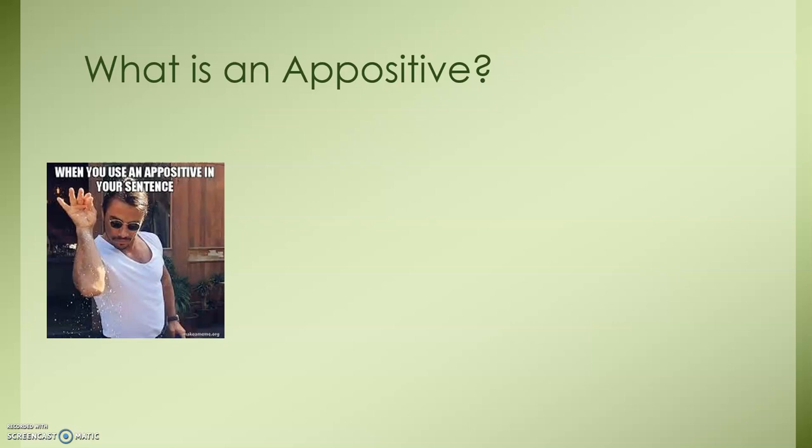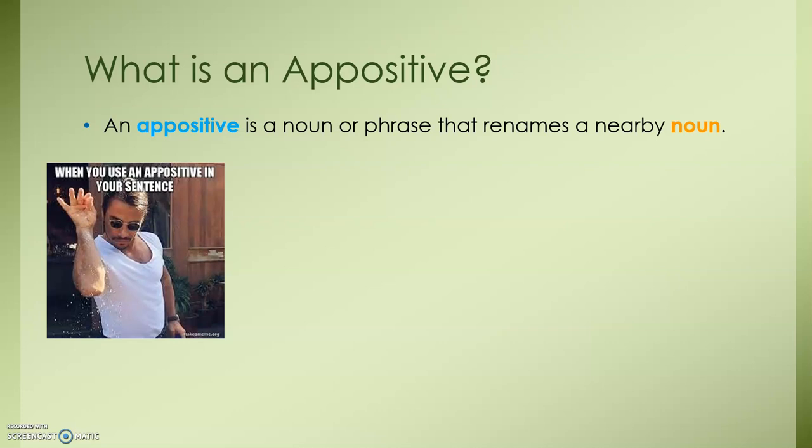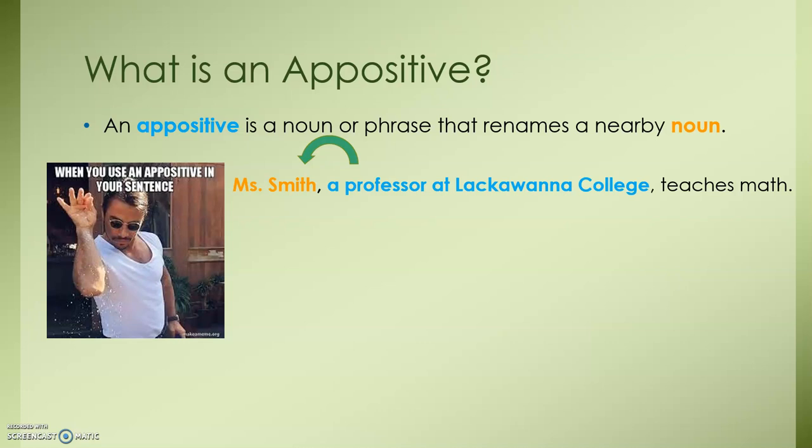An appositive is a noun or phrase that renames a nearby noun, so it basically gives a little extra information. Here's an example: Ms. Smith, a professor at Lackawanna College, teaches math. Here we have our appositive phrase in blue — a professor at Lackawanna College — describing the noun in orange next to it, Ms. Smith. Right there, we have our appositive.